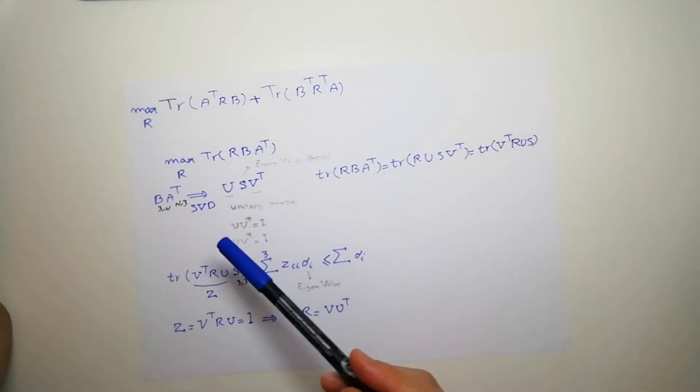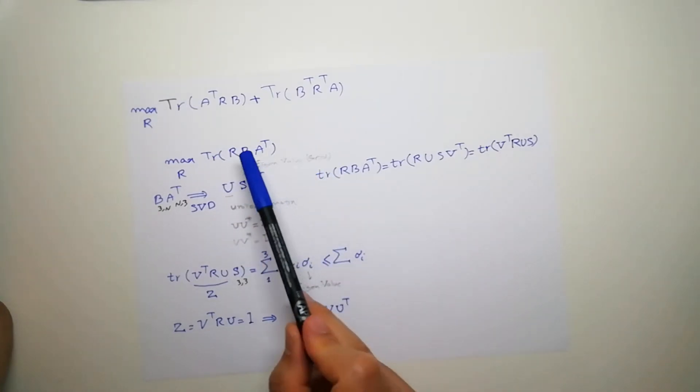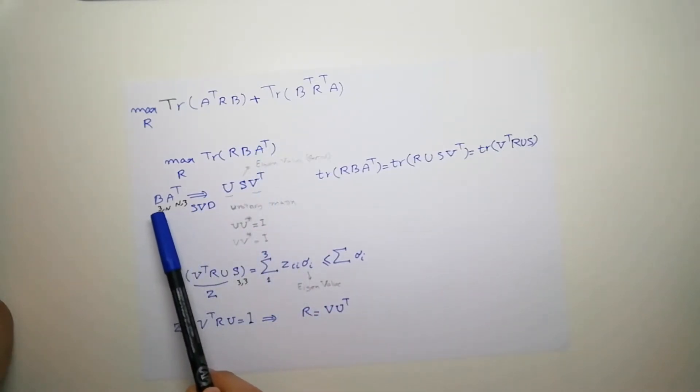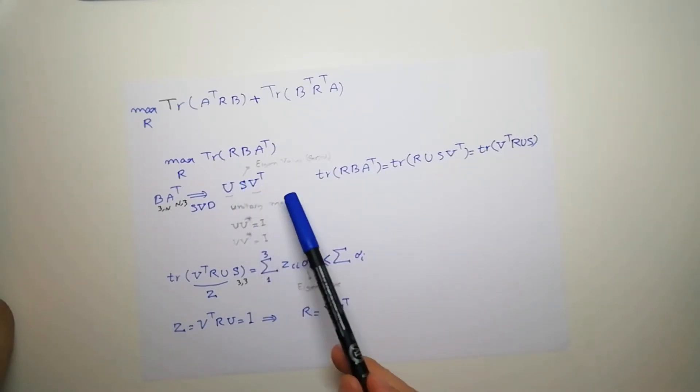So let's write the SVD for these matrix B A T. B is a 3 by N and A is N by 3, so this is 3 by 3. The SVD of this matrix is U S V. And we know that U and V are unitary matrices, that means if you multiply them by the conjugate transpose, give us the identity. And value on the S, S is a diagonal matrix, which has only value on the main diagonal. And the values are eigenvalues sorted, so the first one is the biggest one, and gradually it gets smaller.